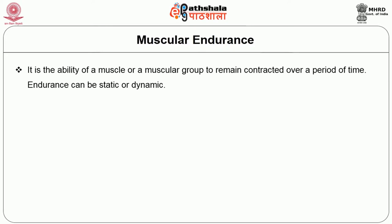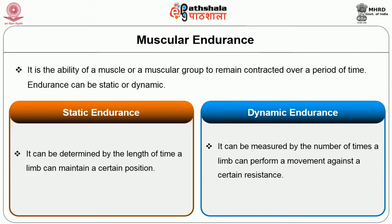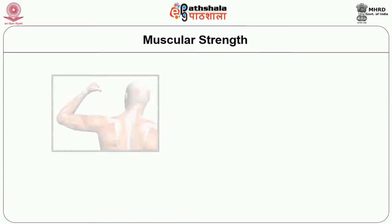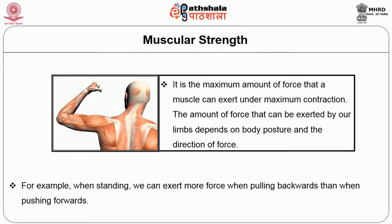Muscular endurance is the ability of a muscle or muscle group to remain contracted over a period of time. Endurance can be static — determined by the length of time a limb can maintain a particular position — or dynamic, measured by the number of times a limb can perform a movement against a certain resistance. Muscular strength is the maximum amount of force a muscle can exert under maximum contraction. The force that can be exerted by our limbs depends on body posture and direction of force.